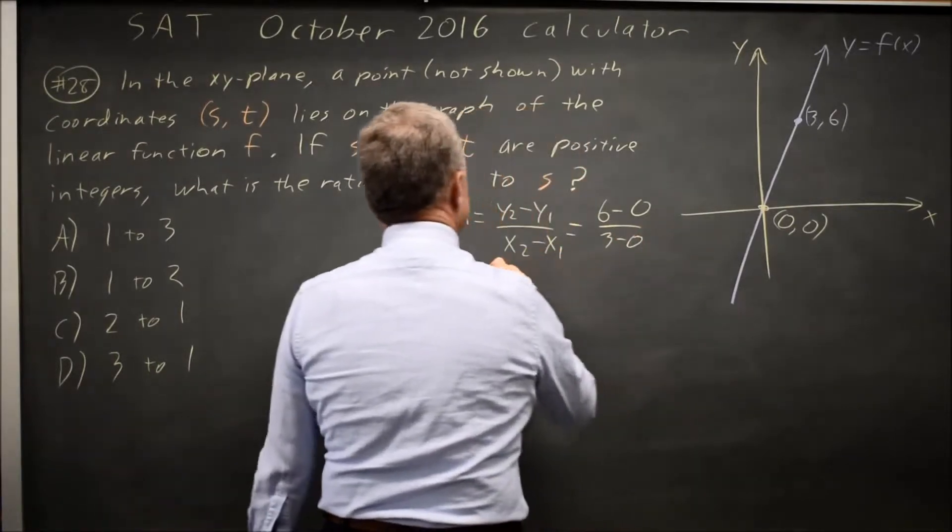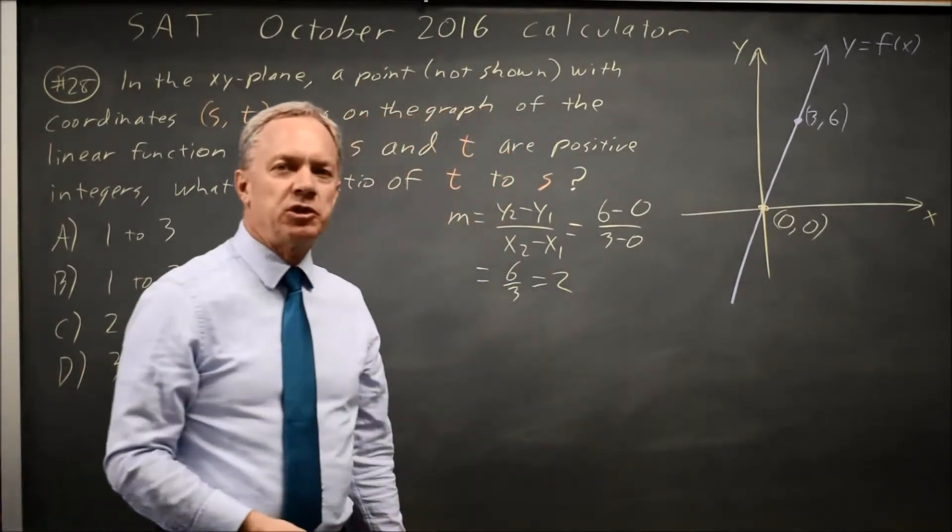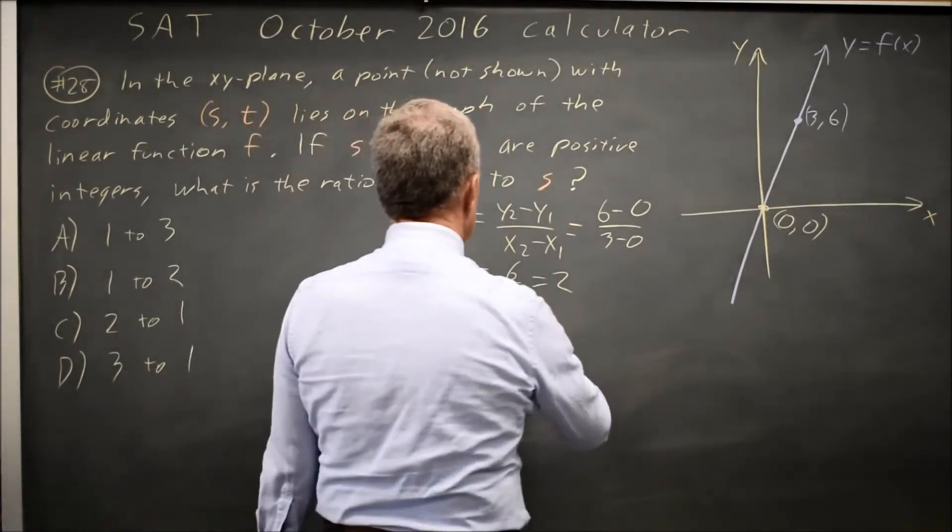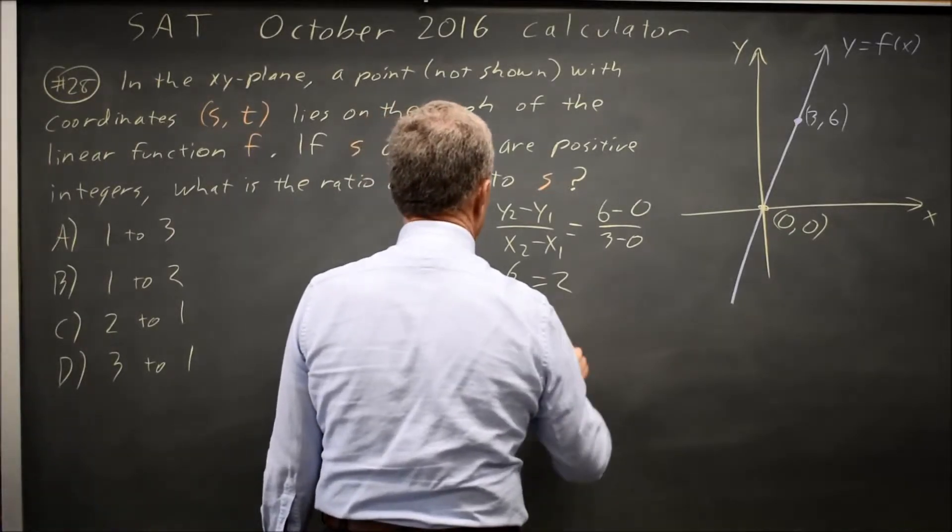So this is a line with slope 2 that passes through the origin. The equation y equals mx plus b is y equals 2x plus 0.